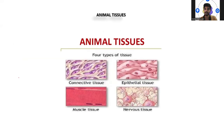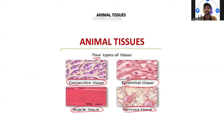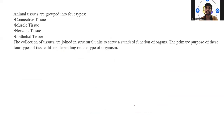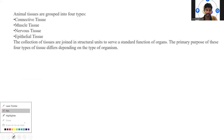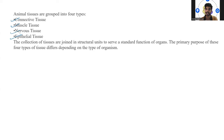As I'm talking about animal tissues, we have four types of animal tissues. One is connective tissue, then we have epithelial tissues, muscle tissues, and nervous tissue. These are the basic tissues we come across when dealing with animals. These four types of tissues are grouped together in a structural unit to serve a standard function of an organ.